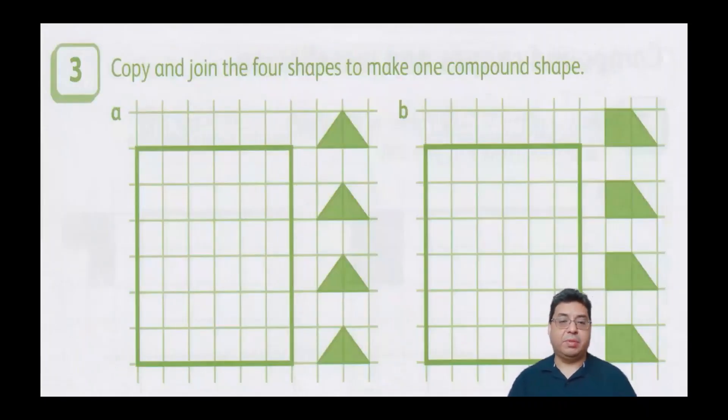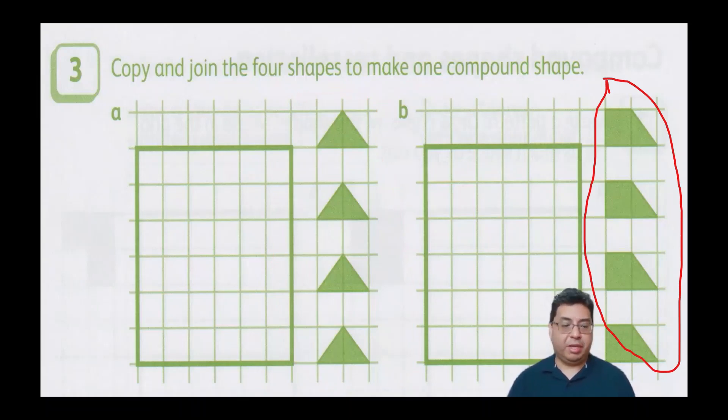And for this one here, I just want you to copy and join the four shapes to make one compound shape. So you kind of saw on the Math Learning Center that I kind of made a compound shape, and then I just did a tessellation of the other. So for this one, just take these shapes for A, these four, and make one compound shape. And for letter B, take this one as well, and make one compound shape.